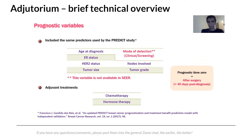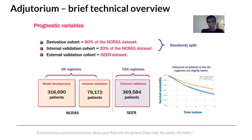80% of the NCRAS data — 316,000 patients — was used for model development; 20% (approximately 80,000 patients) for internal validation; and the entire US dataset of 369,000 patients for external validation. The two datasets are not exactly the same in patient distributions or outcomes — the US had slightly better prognostic outcomes and different characteristics for each prognostic variable. Testing on this external dataset demonstrates the model's robustness to distributional shifts and whether the model derived from UK data can be used in other countries.